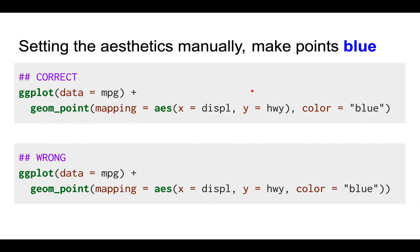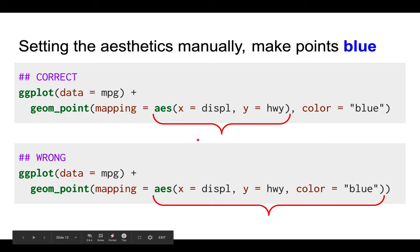Now take a look at these two code snippets. The one on the top is correct and the one at the bottom is wrong. Can you tell the difference? What you notice is that in the one on the top, the color is an option to geom_point, but in the code at the bottom, the color is an option to the aesthetic mapping. That's the key difference - where the closing parenthesis is controls how R interprets the code.